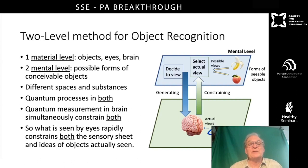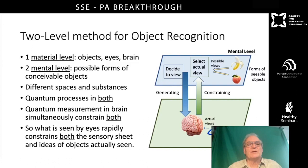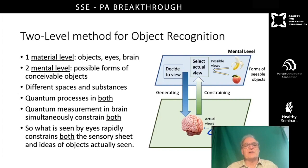I'm going to look at a two-level method for object recognition in which there's a material level — shown in green — which contains the object being seen, namely the apple, the eyes which see the apple by means of light, and the brain which gets information from the eye. But as well as this level, I'm going to theorize that there's a mental level in which there are possible forms of conceivable objects, which are quite different kinds of substances — ideas or objects of consciousness, not material objects. So there are now different spaces and different substances, but we can still think of quantum-like processes in both of these planes.